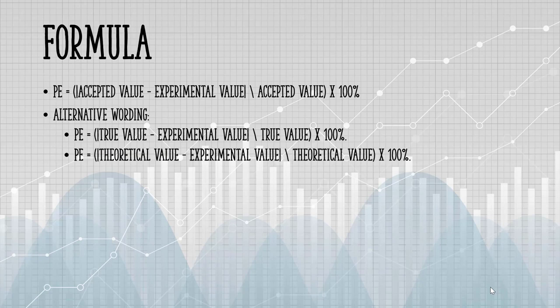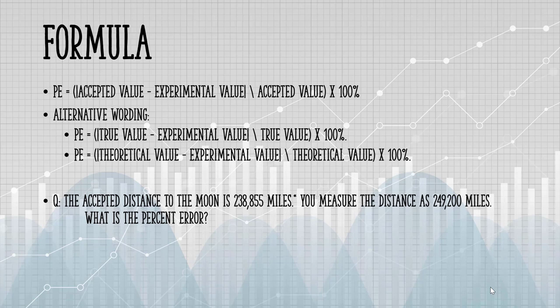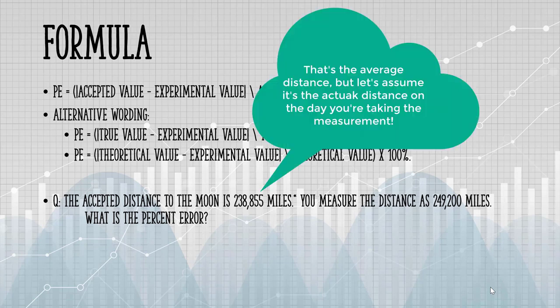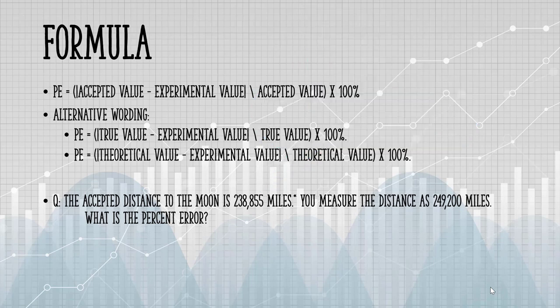As an example, the accepted distance to the moon is 238,855 miles. You measure the distance as 249,200. What is the percent error? We insert that data into the formula.